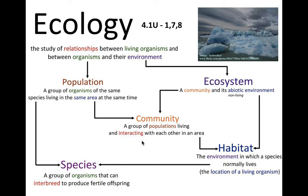A community is a group of different populations of different species living and interacting with each other in an area. A community is part of an ecosystem. An ecosystem is a community and its abiotic factors — all the non-living things present as well, like water, sunlight, and different nutrients that are cycling, which support the community with its different populations of individual species.